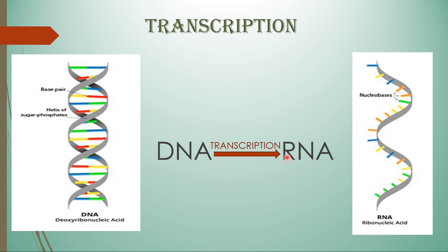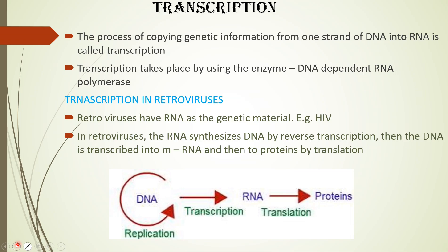So the DNA is transcribed into RNA, and then RNA is translated into protein — we'll see that next. The definition of transcription: the process of copying the genetic information from one strand of DNA into RNA. DNA usually consists of a double helix, but only one strand of DNA is transcribed into its complementary RNA; the other strand is not transcribed. This copying is called transcription.